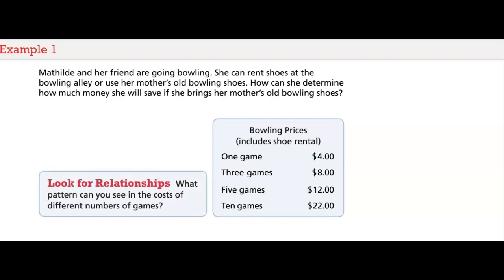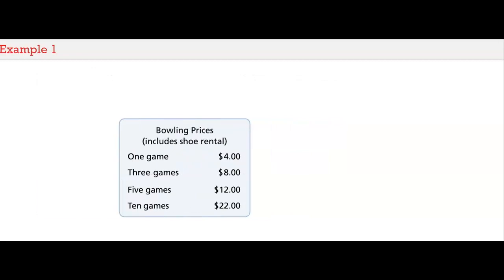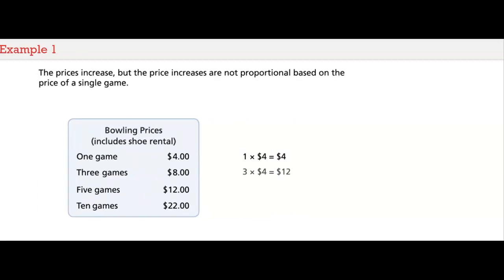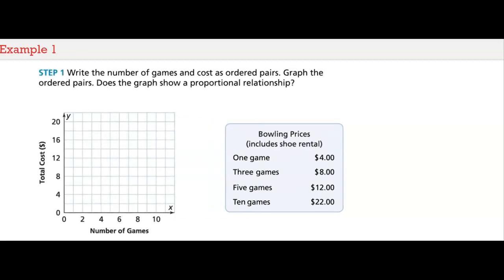Let's start by looking for a relationship. What pattern can you see in the cost of different numbers of games? The prices increase, but the price increases are not proportional based on the price of a single game. The first step is to write the number of games and cost as ordered pairs: 1, 4; 3, 8; 5, 12; and 10, 22.